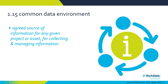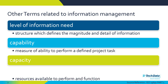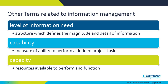A common data environment — such as BIM 360 or a cloud storage solution — is an agreed source of information for any given project or asset for collecting and managing information. Level of information need defines the magnitude and detail of information required for a certain object, piece of furniture, or floor finish. Capability relates to whether the task team or delivery teams have the Revit skills, software, and hardware capable to deliver a BIM level 2 project — and whether they need to upgrade systems or train staff. Capacity refers to whether they have enough resources, such as an in-house BIM manager or BIM coordinator.